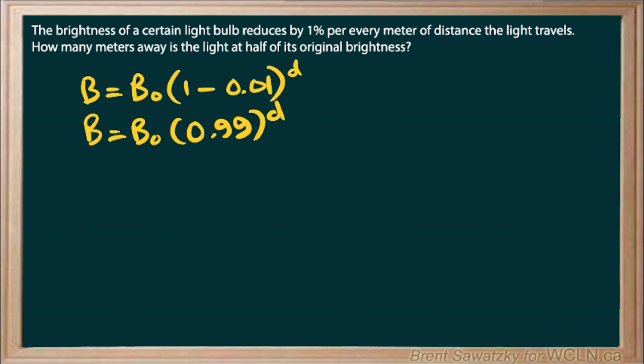And our question is, how many meters away from the light at half of its original brightness? So what we're saying here is that the brightness, as compared to the original brightness, should be 50%.